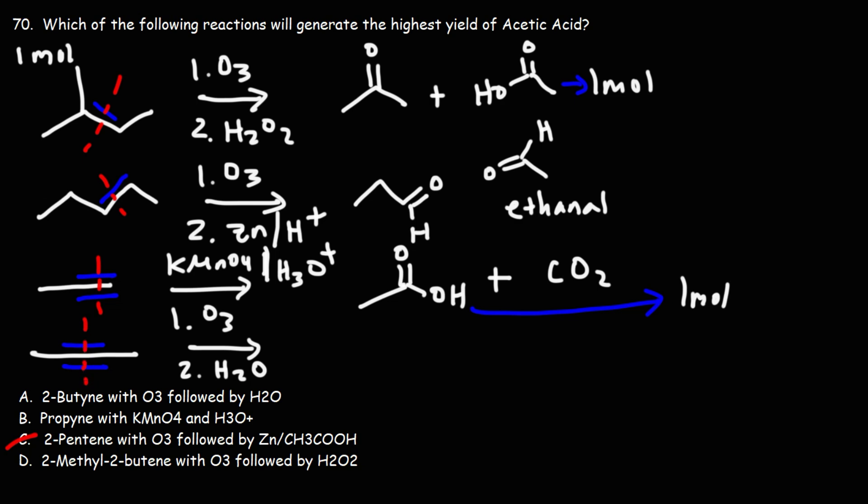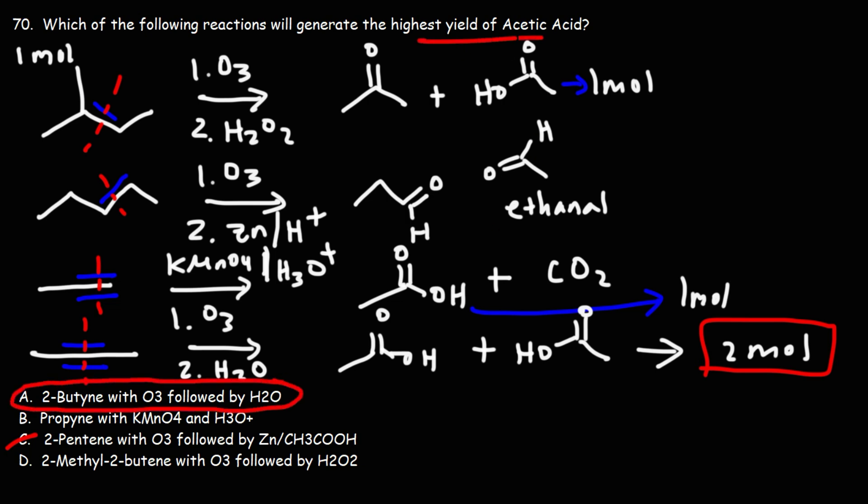And because we have two carbons on each side, we're going to get ethanoic acid on both sides. So from one mole of butyne, we're going to get two moles of ethanoic acid. Therefore, answer choice A is the correct answer. It's going to give us the highest yield of acetic acid.